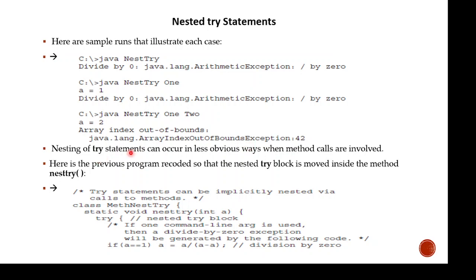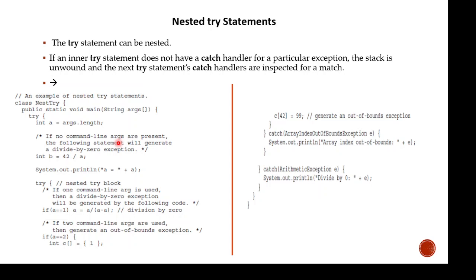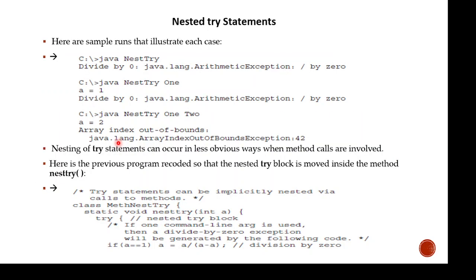This nesting of try statements can also occur in less obvious ways when method calls are involved. You can enclose a call to a method within a try block, and inside that method there is another try statement. In that case, the try statement within the method is still inside the outer try block that calls the method.